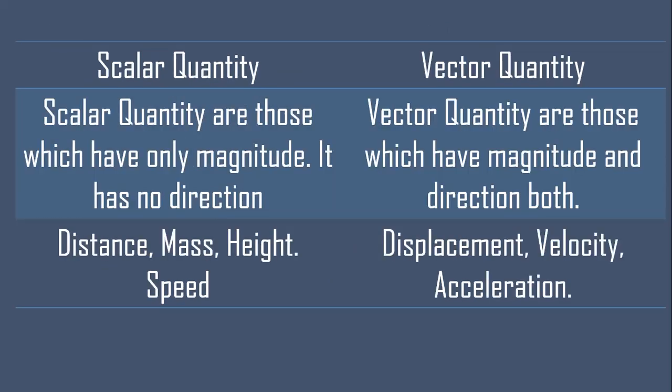Next: what are scalar quantities and what are vector quantities? Scalar quantities are those which have only magnitude and no direction. For example, height — if I ask your height, you say 5 or 6 feet. Going north doesn't change your height, so it is direction-independent. Distance is also a scalar quantity — your school is 7 km away regardless of direction.